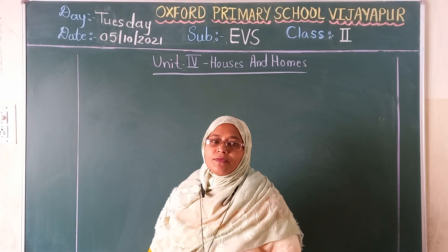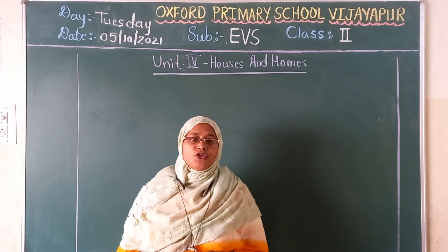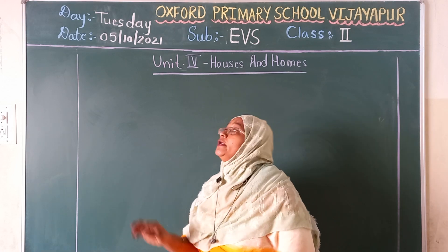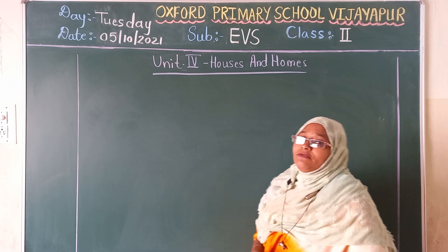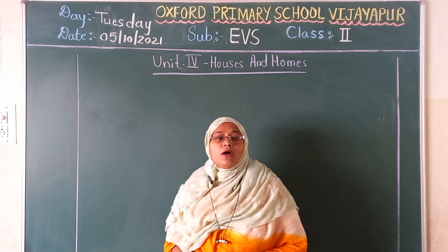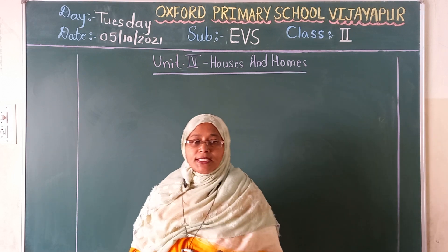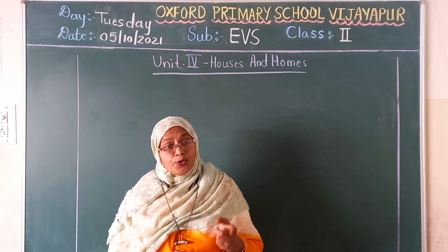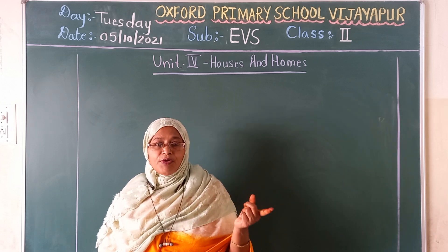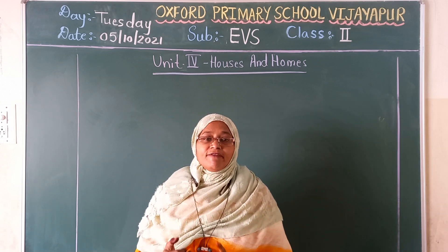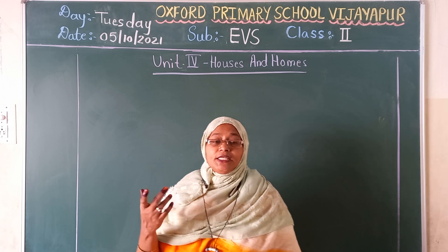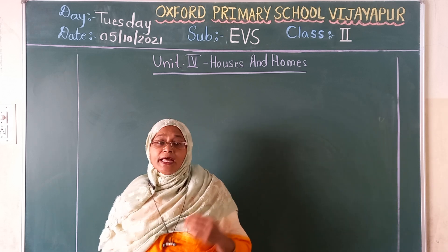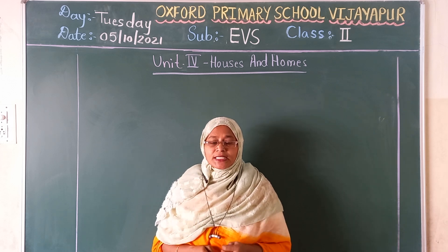Good morning children. So children, in our Monday's class, what we have written? New words. New words of unit 4, homes and houses. Already we have written 20 new words before. Then yesterday we have written 21 to 38 new words. Shall we read yesterday's words? Then we will move to our today's class.